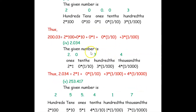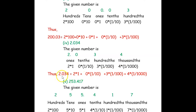The next number is 2.034. We write 2.034. The digit immediately left of the decimal is ones; to the right we have tenths, hundredths, and thousandths. So we have 2 ones, 0 tenths, 3 hundredths, 4 thousandths. The expanded form is: 2 × 1 + 0 × (1/10) + 3 × (1/100) + 4 × (1/1000). This is the expanded form.